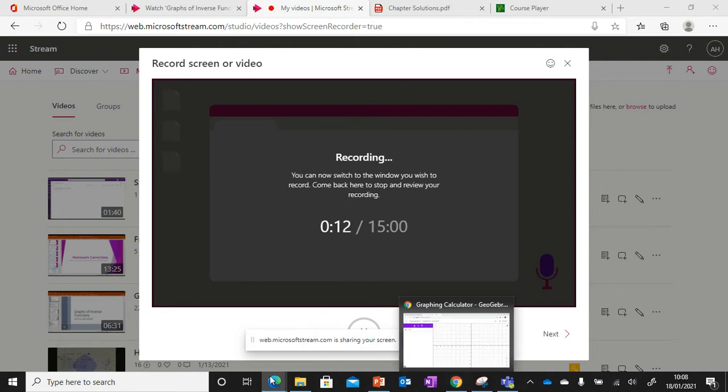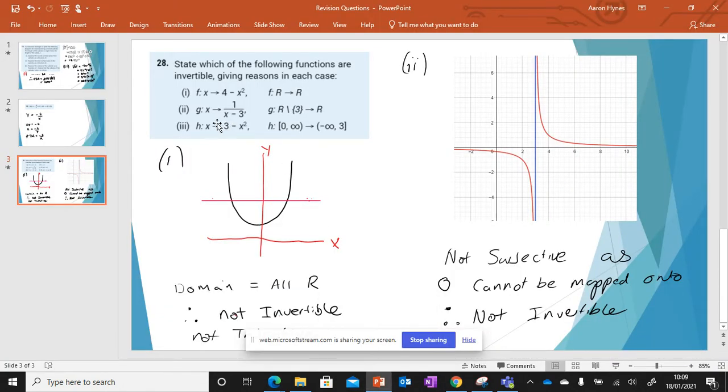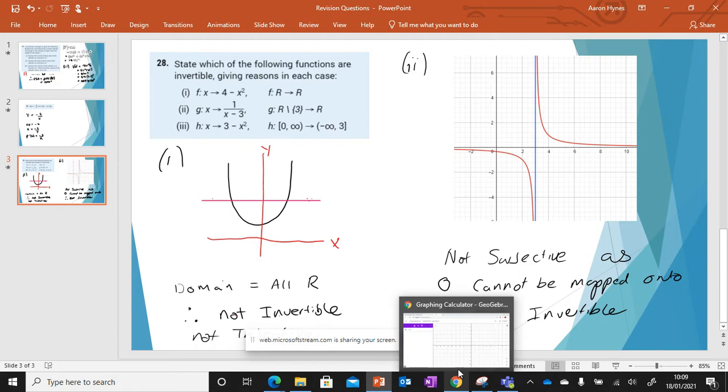So let's have a look. We have a couple of awkward functions here for the homework. So for part 2, let's say g of x equals 1 over x minus 3. This might be difficult to visualize or graph. So we'll have a look here.